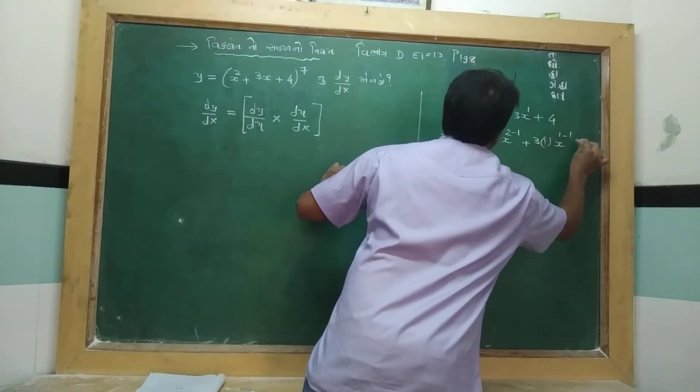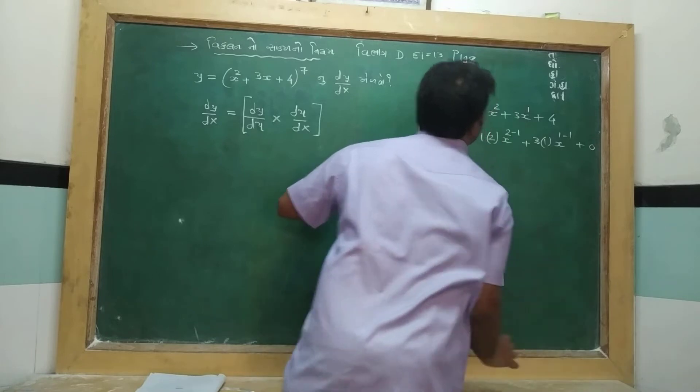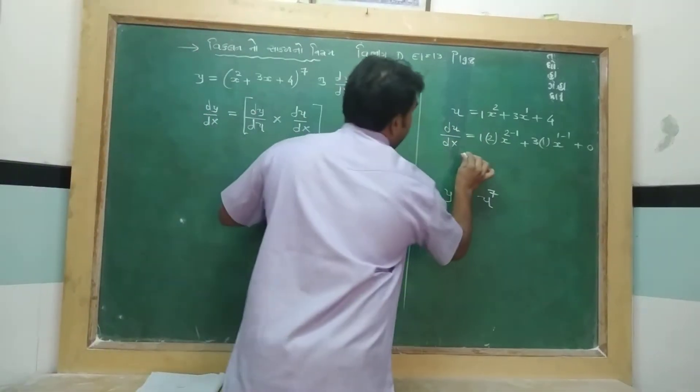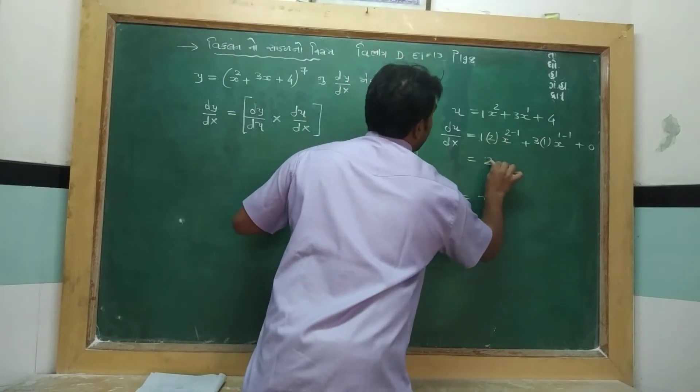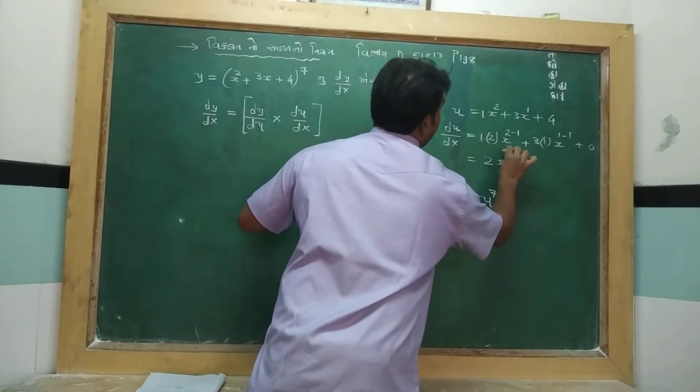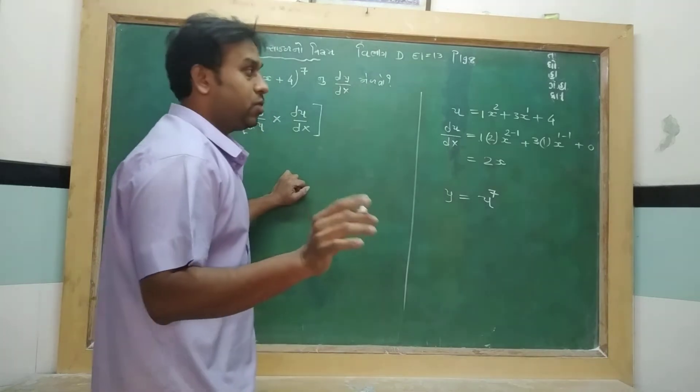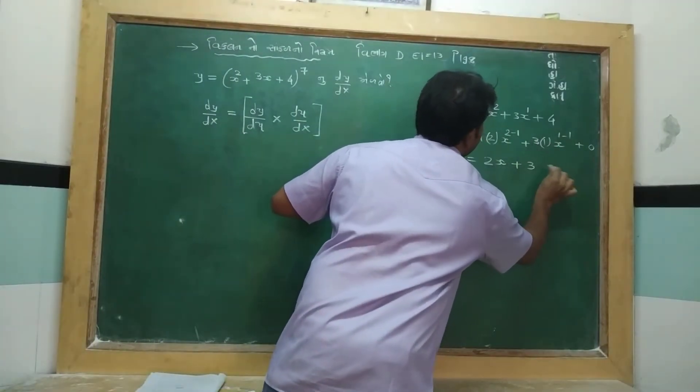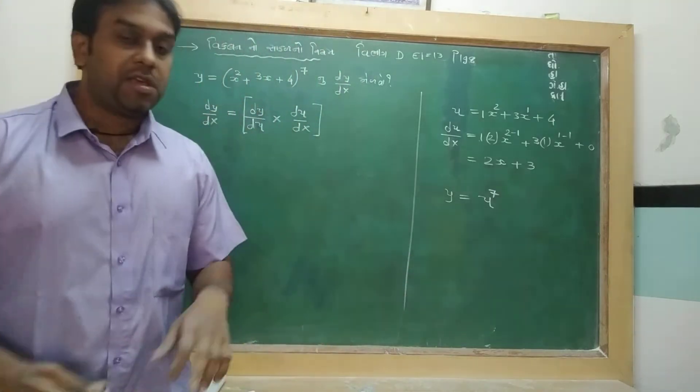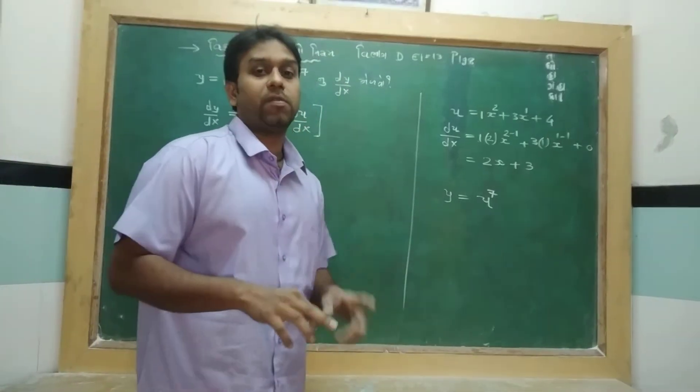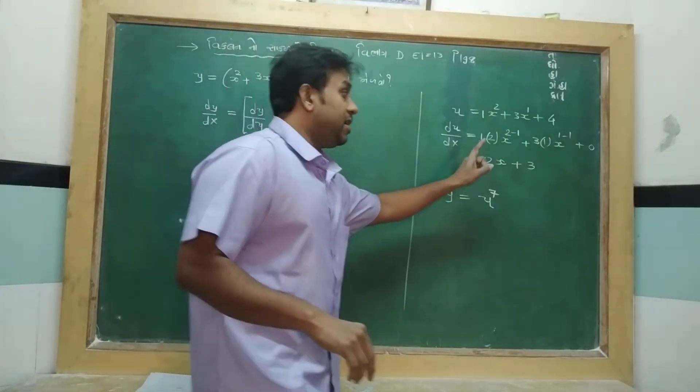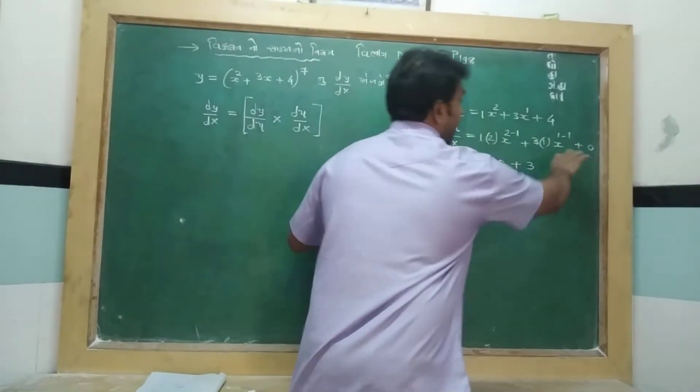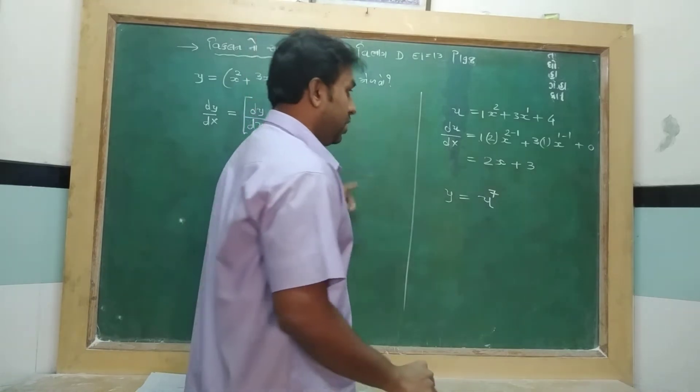If you want to see this, 2 times 1, x to the power 1, power 2 minus 0, plus 3 times 1, x to the 0 power 2 minus 0, x to the 0 power 1, and this condition is 1 and it is 1, 0 and it is 0.